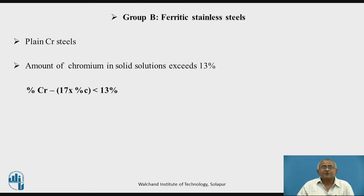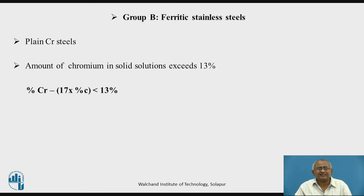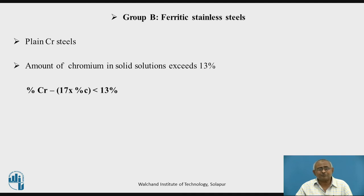In this session, we are focusing on Group B variety of stainless steels, that is ferritic stainless steels. These ferritic stainless steels are cheaper varieties of stainless steel. They are plain chromium steels because along with carbon, they contain only chromium as an alloying element. Chromium being a cheaper alloying element, these ferritic stainless steels are called cheaper varieties of stainless steel, but even though they are cheaper, they have excellent properties and find very wide use in engineering. In these Group B varieties, the amount of chromium in solid solution exceeds 13 percent, that is: percentage chromium minus 17 times percentage C is greater than 13 percent.